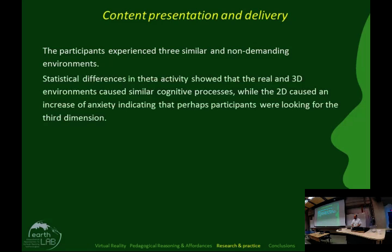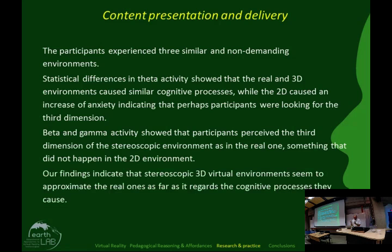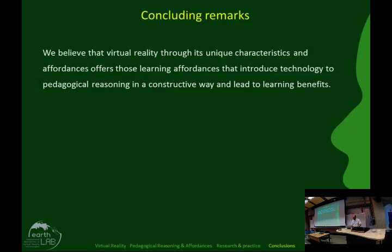The statistical differences showed that in theta activity, the real and 3D environments caused similar cognitive processes, while the 2D environment caused an increase in anxiety, perhaps indicating that participants were looking for the third dimension. Beta and gamma brain activity showed that participants perceived the third dimension of the stereoscopic environment as in the real one — something that did not happen in the 2D environment. Our findings indicate that stereoscopic 3D virtual environments seem to approximate real ones in terms of the cognitive processes they cause.